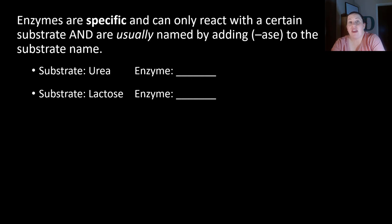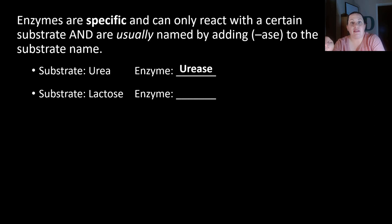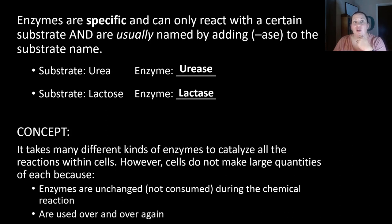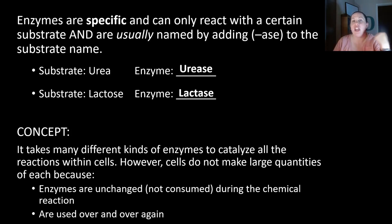Enzymes are specific — they can only react with a certain substrate, not just anything. They are usually named by adding '-ase' to the substrate name. If the substrate is urea, the enzyme is urease; if the substrate is lactose, the enzyme is lactase. Importantly, because enzymes are unchanged in the process, they can be reused over and over again. This means you don't necessarily need huge quantities of them — you may only have a few, but they can be used repeatedly.